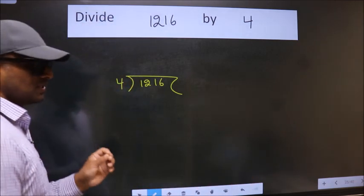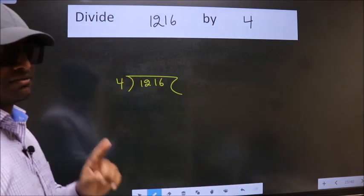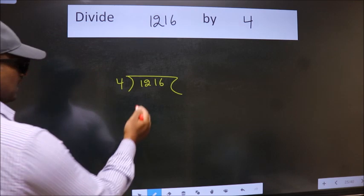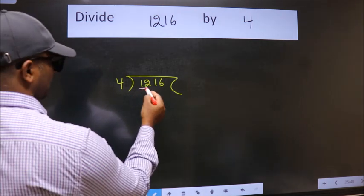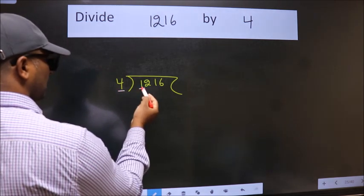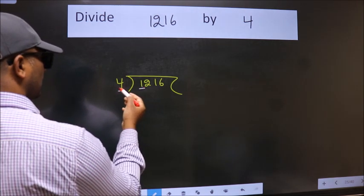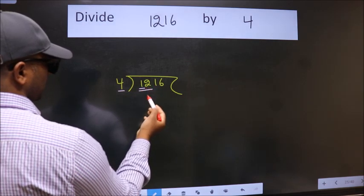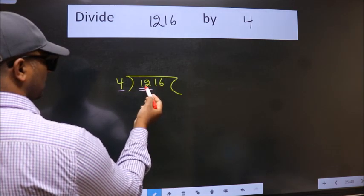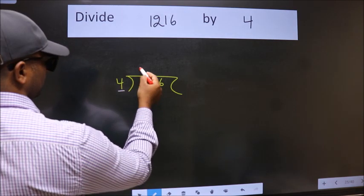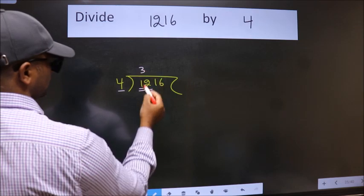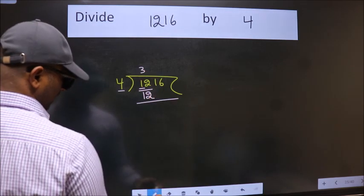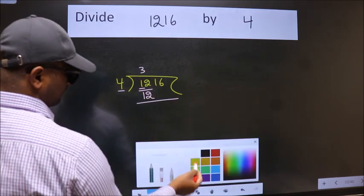This is your step 1. Here we have 1, and 4. Since 1 is smaller than 4, we should take two numbers: 12. When do we get 12 in the 4 table? 4 times 3 is 12. Now we should subtract — we get 0.